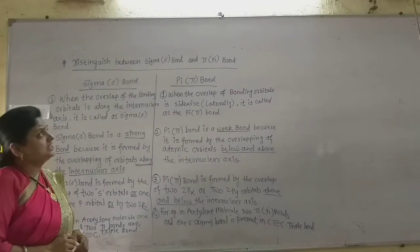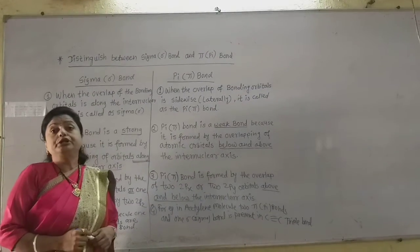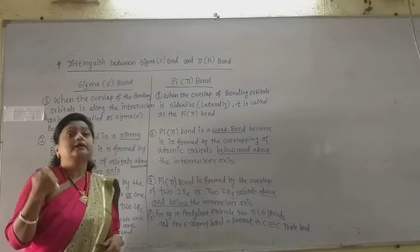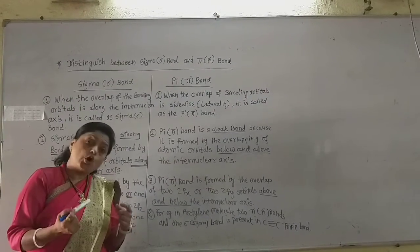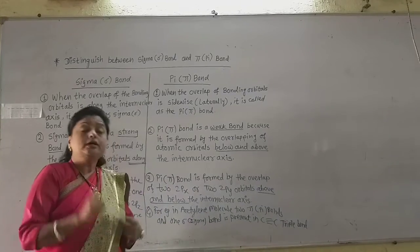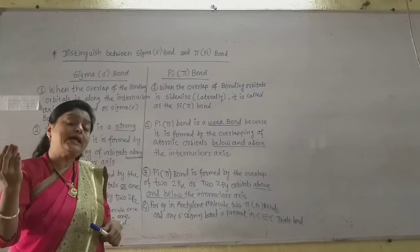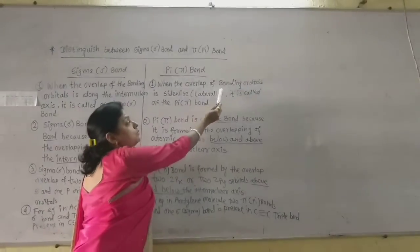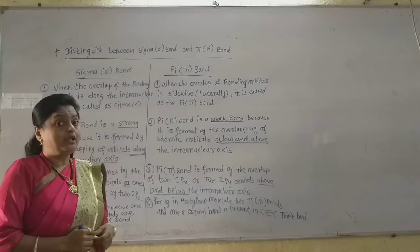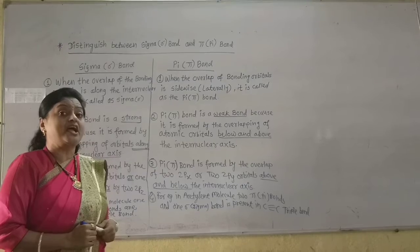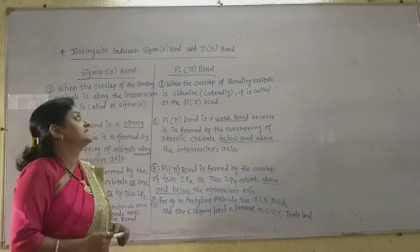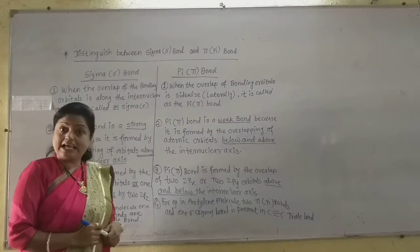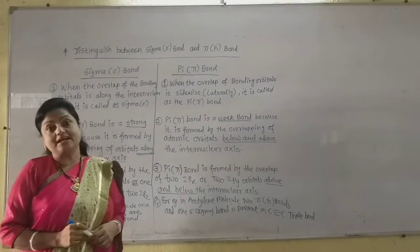Pi bonds are formed due to the overlapping of atomic orbitals above and below the inter-nuclear axis. That means the overlap is sideways or lateral. When the overlap of the bonding orbitals — especially p orbitals such as px and py — overlap laterally or sidewise, then it is called a pi bond.